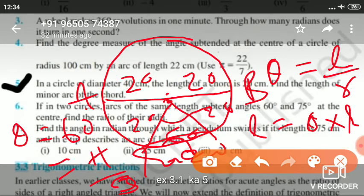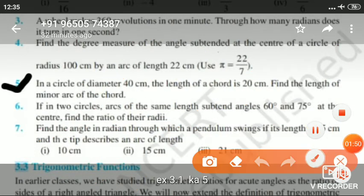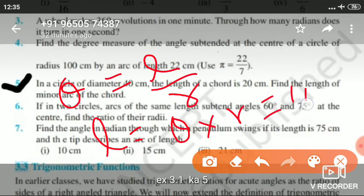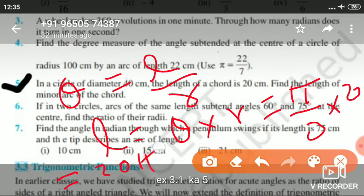You have to find the length of the arc. So if you have to find the length of the arc, theta equals L by R, then L equals theta into R. Theta value is pi by 3, and this value is 20, that equals 20 pi upon 3 centimeters. Understood?